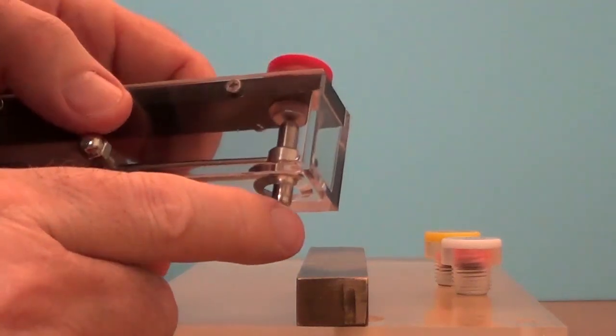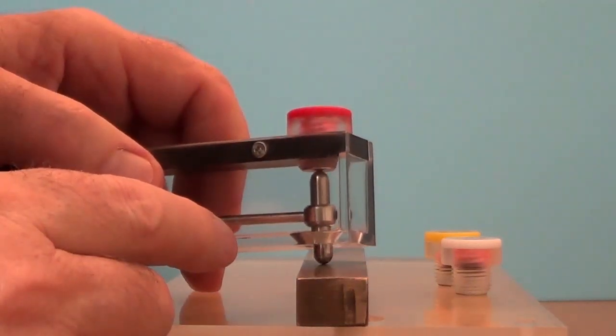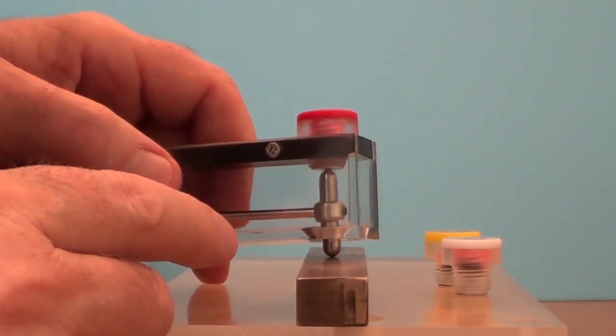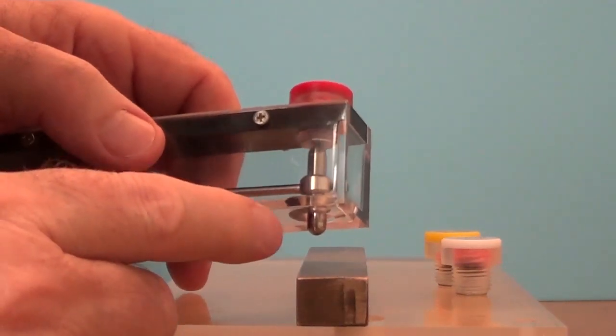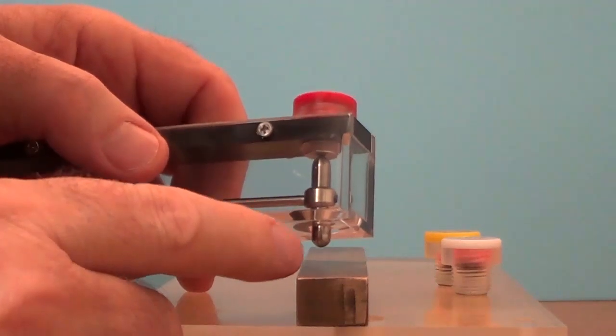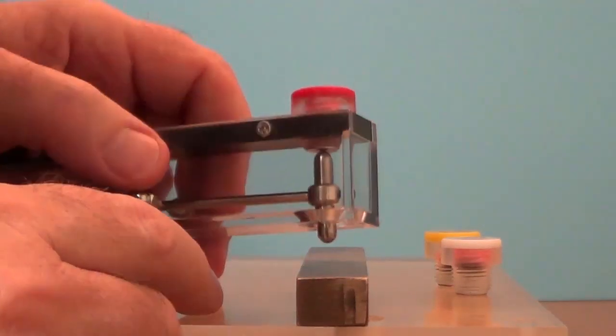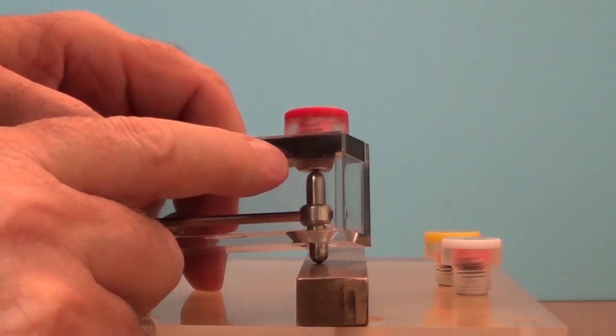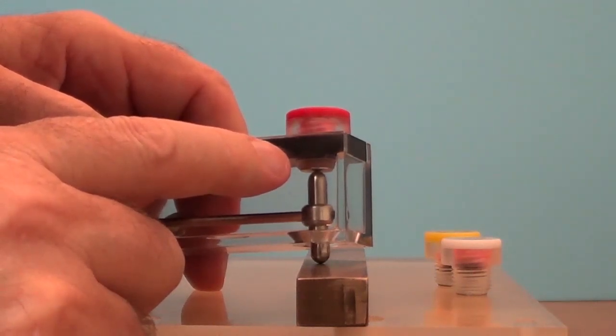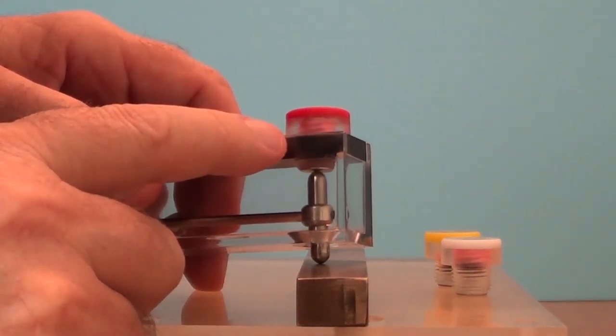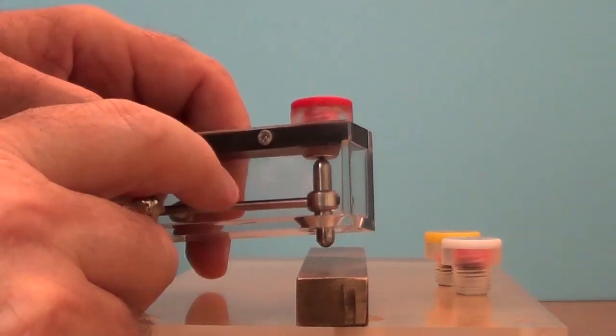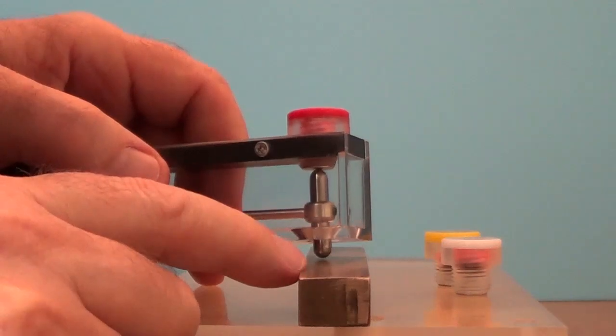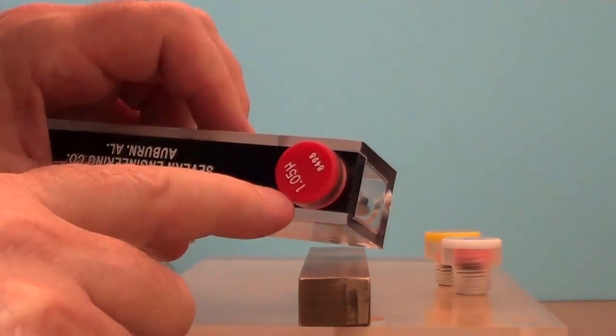Instead the end of the magnet that is in contact with the sample pulls away. So consequently the attractive force between the sample and my bar magnet is less than the attractive force between the other end of the bar magnet and the bottom of this insert. And that means that the magnetic permeability of this sample is less than 1.05.